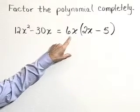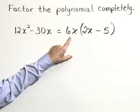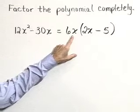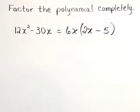And thus the completely factored form of 12x squared minus 30x is 6x times the binomial 2x minus 5.